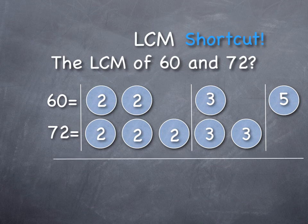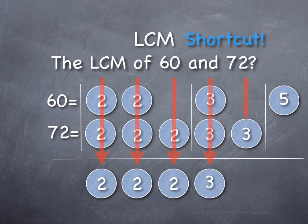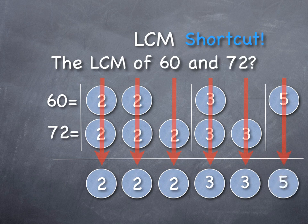In the last video we saw that for the lowest common multiple, we choose each different prime factor that is available. So if one of the numbers has three twos, we keep three. If one of them has two threes, we keep both. If only one has a five, we still keep the five. We keep each one of those rows and multiply them all together — in this case we get 360.